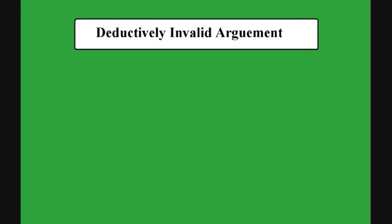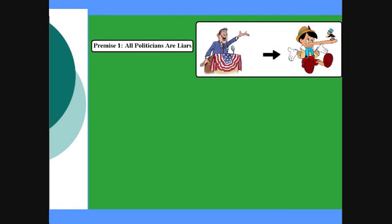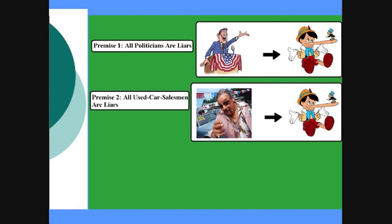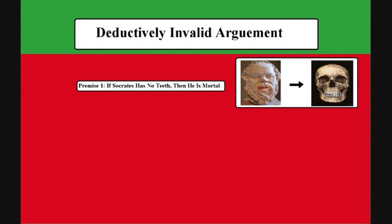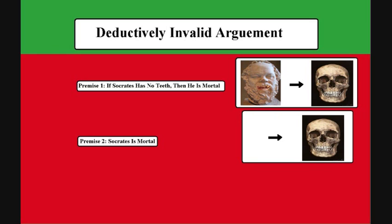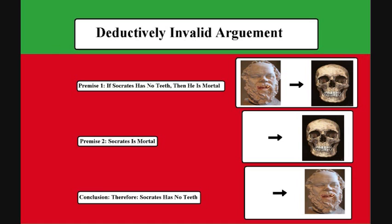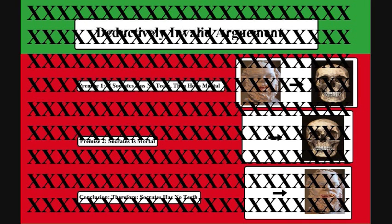A deductively invalid argument might go something like this. Premise 1: All politicians are liars. Premise 2: All used car salesmen are liars. Conclusion: Therefore, it follows that all politicians are used car salesmen. Another example — Premise 1: If Socrates has no teeth, then he is mortal. Premise 2: Socrates is mortal. Conclusion: Therefore, Socrates has no teeth. In all of these invalid arguments, the conclusion does not logically follow from the premises. Each of these arguments was attempting to make a valid deductive argument, but the attempt failed. Furthermore, these arguments would be invalid regardless of the order of the premises.